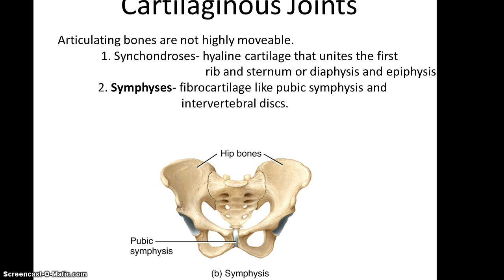Then there's the symphysis, which is a fibrocartilage found in a disc shape, either in the pubic symphysis between the two hip bones, or between the vertebrae as intervertebral discs.